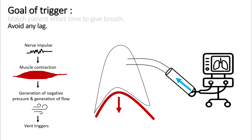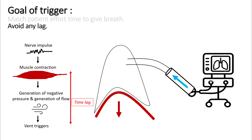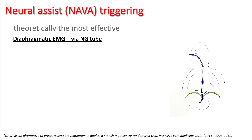The second goal is to avoid any lag. The stimulus for breathing comes from nerve impulses from the brain, which results in muscle contraction, which results in negative pressure, then generation of flow — and that's what is sensed by the ventilator. So there's a time lag between muscle contraction and before the machine gives the breath. Because of this time lag, the patient can have some discomfort in breathing. An ideal trigger avoids any lag — meaning anytime your muscle contracts, the machine gives you the breath at the same time. For this, neural assist triggering was invented.